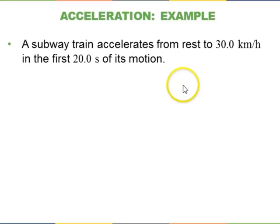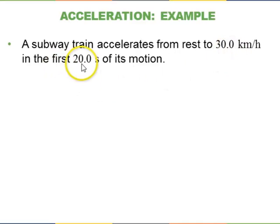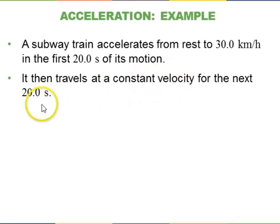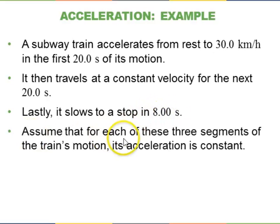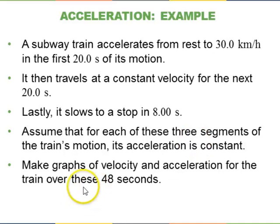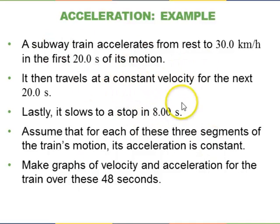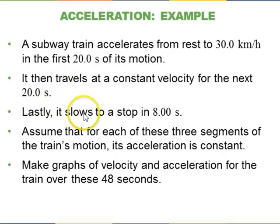A subway train has three segments of motion: first it accelerates from rest to 30 kilometers per hour over 20 seconds; then it cruises at constant velocity for the next 20 seconds; finally it slows to a stop in the last 8 seconds. Assuming constant acceleration during each segment, the question asks us to graph velocity and acceleration over these 48 seconds. We'll calculate A1 (speeding up), A2 (constant velocity), and A3 (slowing to stop).